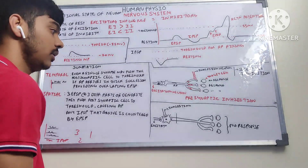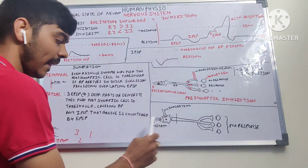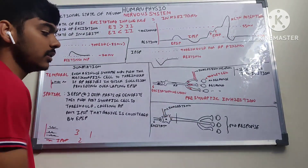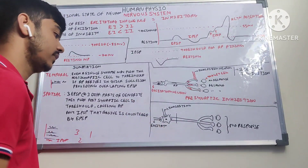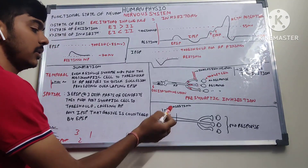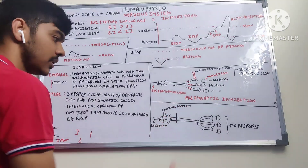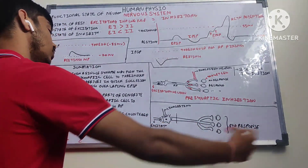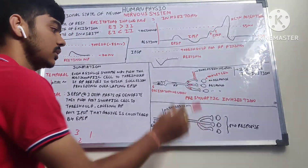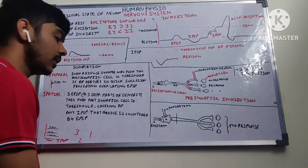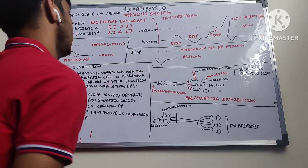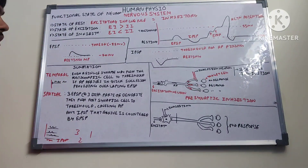In post-synaptic inhibition, two neurons are present at the dendrites — one excitatory and one inhibitory. They both cancel each other out, so there is no response seen at all. Pre-synaptic inhibition is selective, whereas post-synaptic inhibition results in no response overall.